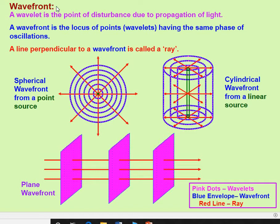Now we are going to discuss wavefront. Before discussing wavefront, consider how a wave is formed. If you take still water and throw a stone on its surface, the medium is disturbed and waves are formed. A wavelet is nothing but a point of disturbance due to the propagation of light.